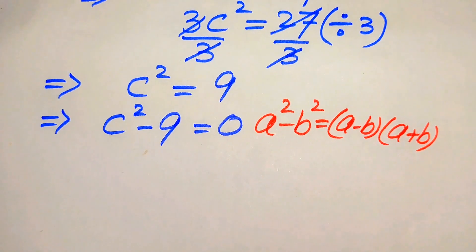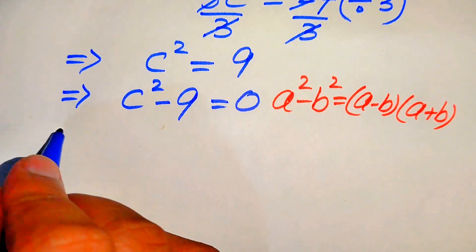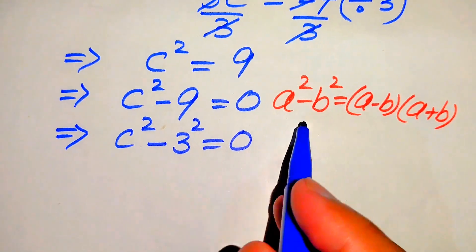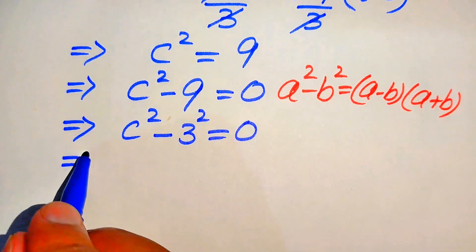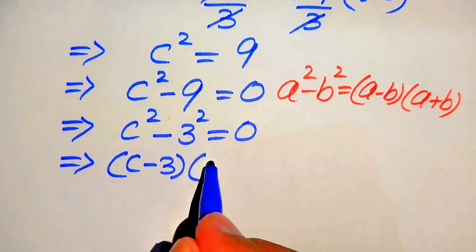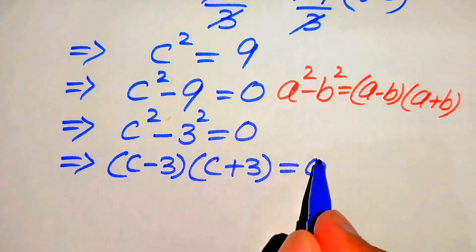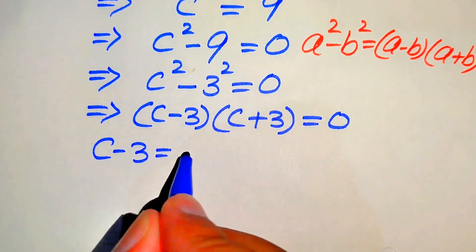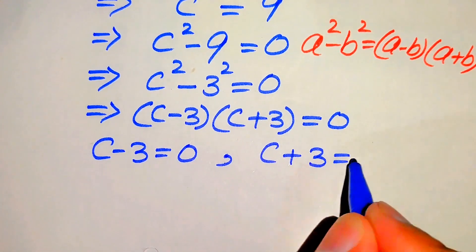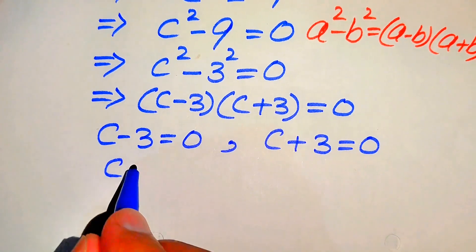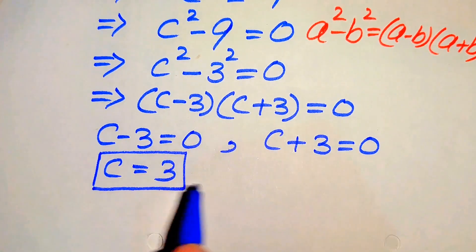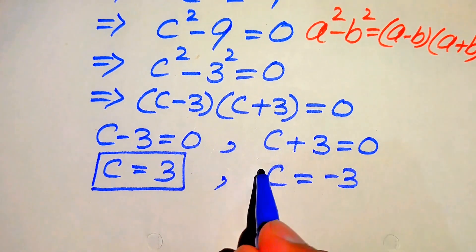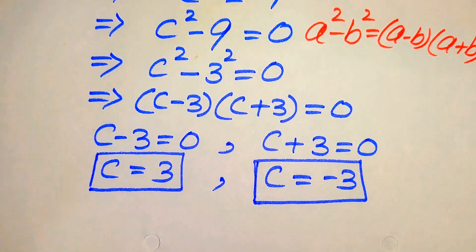According to this algebraic formula, we rewrite the equation as C squared minus 3 squared equals 0, and according to the difference of squares formula this is written as C minus 3 times C plus 3 equals 0. Now we split into two cases: the first case is C minus 3 equals 0, and the second case is C plus 3 equals 0. From the first case we get C equals 3, and from the second case we get C equals minus 3.